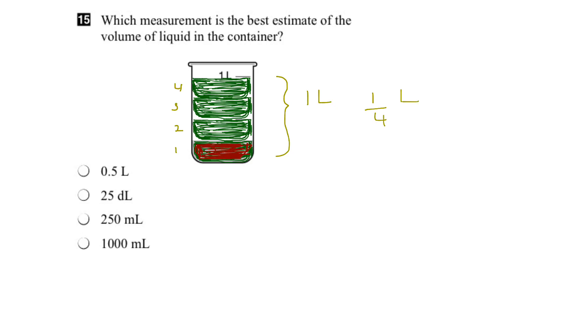So our best estimate here is that this volume is one quarter of a liter. But if we look at the options, they're given in decimals or numbers, so how do we convert this fraction into a decimal equivalent? So we'll take the one quarter liter, and if we divide four into one, we'll end up with 0.25 liters.